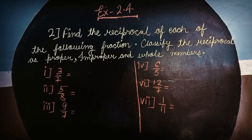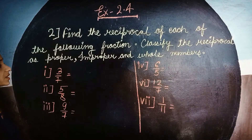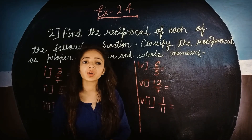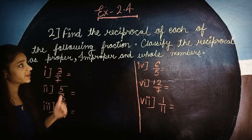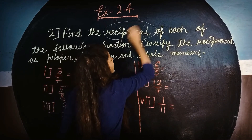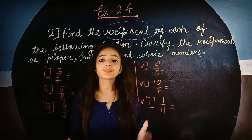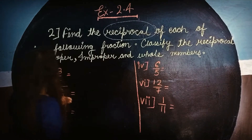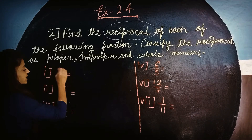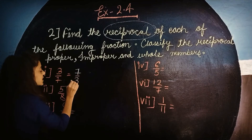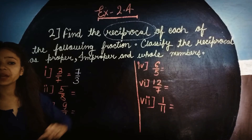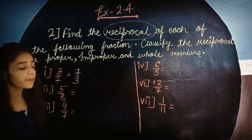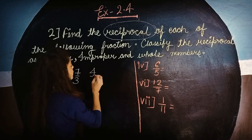Question number 2: find the reciprocal of each of the following fractions and classify the reciprocal as proper, improper, or whole number. First, the reciprocal of 3 upon 7 is 7 upon 3. Now 7 upon 3 has numerator bigger than denominator, so it is an improper fraction.